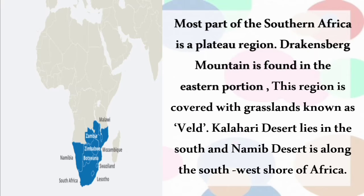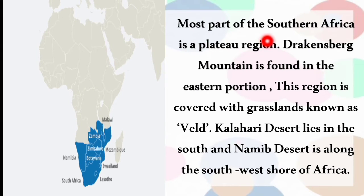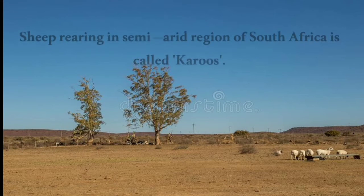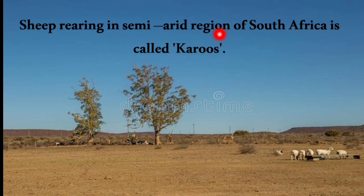Most of Southern Africa is a plateau region. The Drakensberg Mountain is found in the eastern portion, and the region is covered with grasslands known as veld. The Kalahari Desert lies in the south and the Namib Desert is along the west shore of Africa. Sheep rearing in the semi-arid region of South Africa is called Karos.